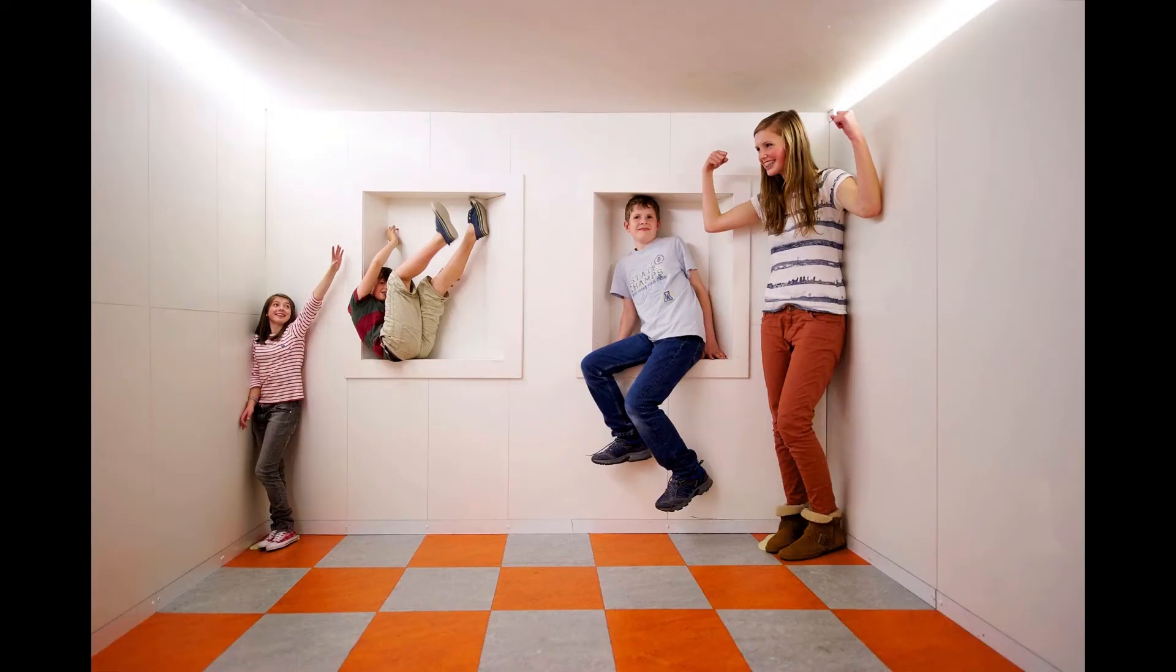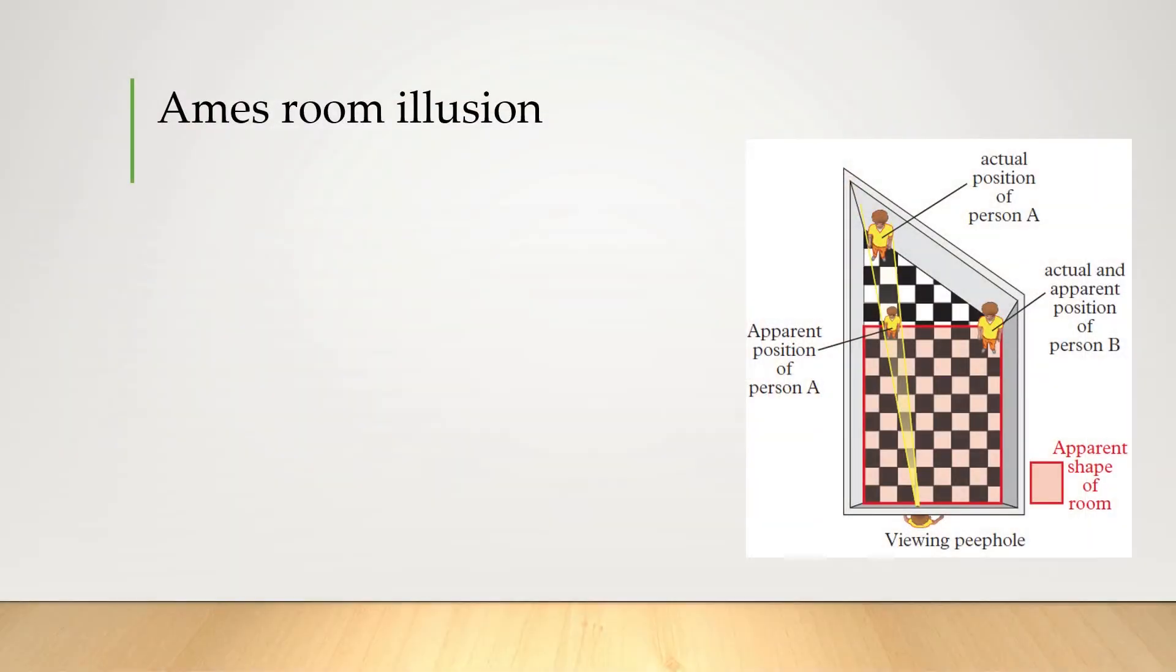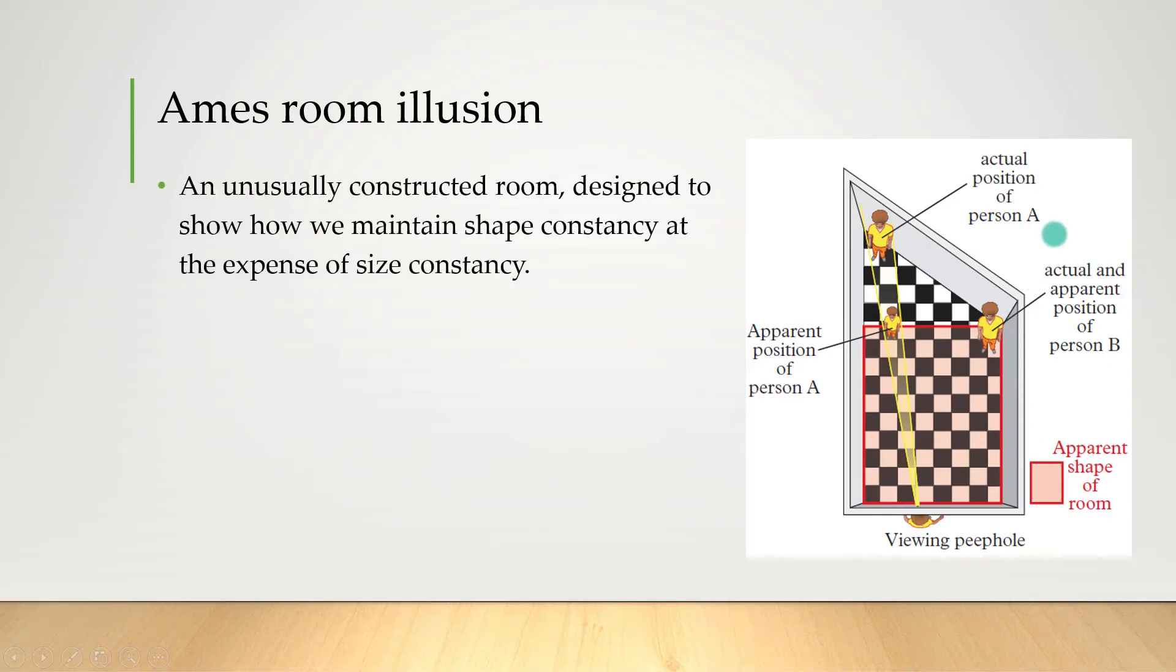Now have a look at this picture. There are no camera tricks or any CG going on here. If you were standing at the exact spot that the camera was, this is exactly what you would see. Now I've seen stuff like this before but it still gets me every time. This is the Ames room illusion and it's done by using a fake room. Well it's real, but not real as we're used to. It's a room specially designed just to prove that we maintain shape constancy at the expense of size constancy.